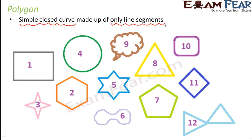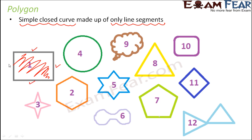Let us analyze the images on screen. The first one — is it simple? Yes, it is a simple curve because it doesn't cross itself anywhere. It is also a closed curve because it encloses a region inside it. And is it only made up of line segments? Yes. Four line segments together form this simple closed curve, so this is an example of a polygon.